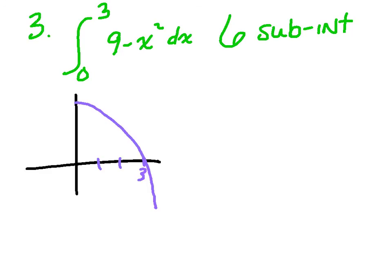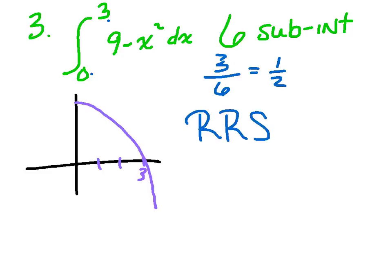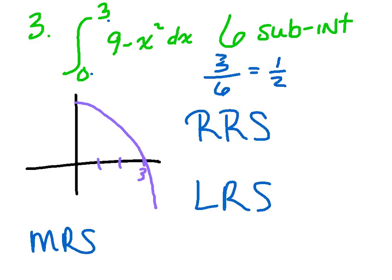This is the last example — example three. If you can do it on your own, you're in fantastic shape. If not, rewind it, try it again, and we'll answer questions tomorrow. Integrate from 0 to 3 of 9 minus x squared dx, with 6 sub-intervals. From 0 to 3 is a distance of 3, and with 6 rectangles, each base is 1 half. Go ahead and set up a right-hand Riemann sum, a left-hand Riemann sum, and a midpoint Riemann sum — pause me and try it on your own.